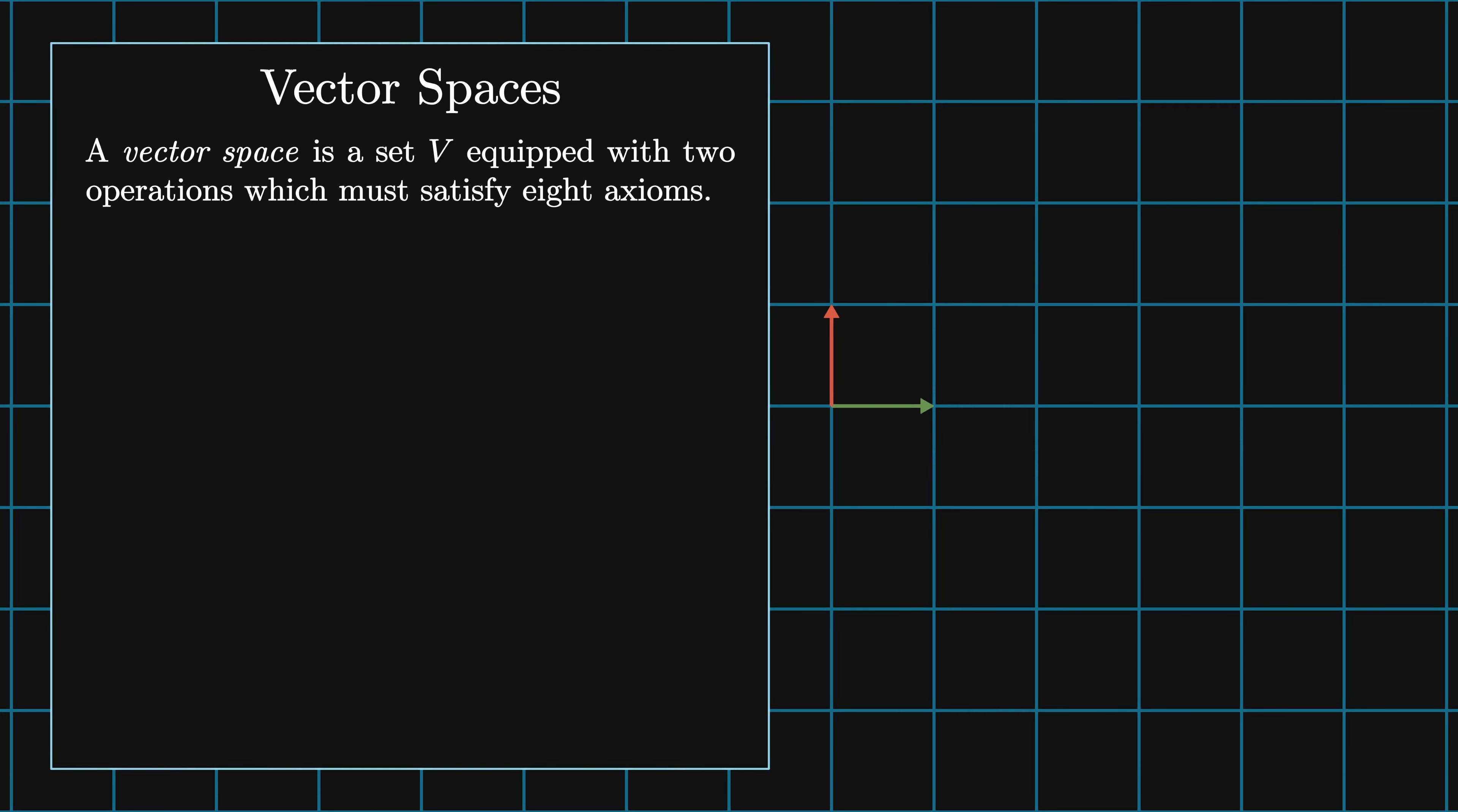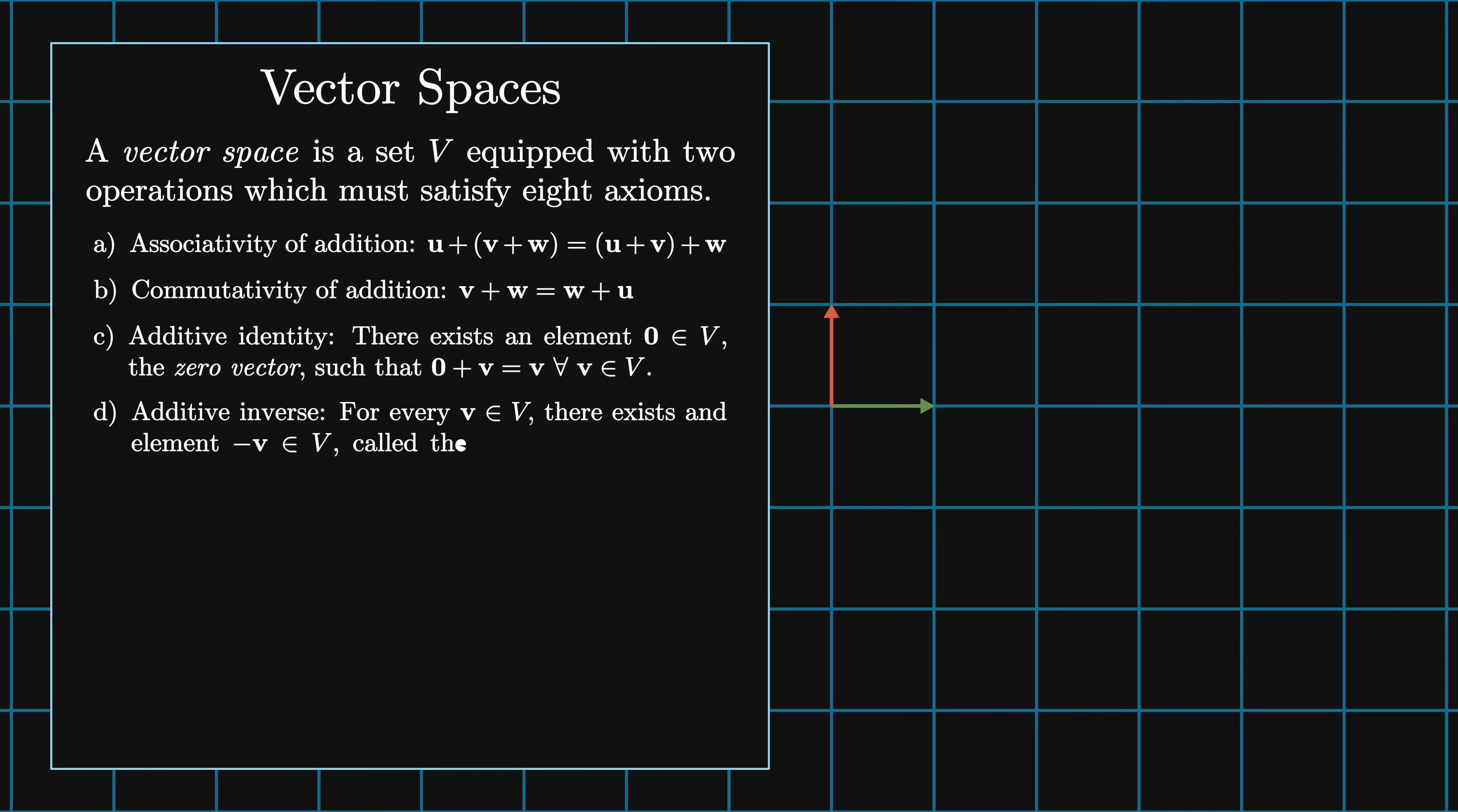The eight axioms they must satisfy are associativity of addition, where u plus the sum of v and w is equal to the sum of u and v plus w. Commutativity of addition, where v plus w is equal to w plus v. The additive identity: there exists a zero vector that can be added to any other vector v in the vector space to return v. Additive inverse: for every vector v in the vector space, there exists another element minus v called the additive inverse of v such that v plus minus v is equal to the zero vector.